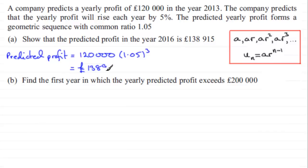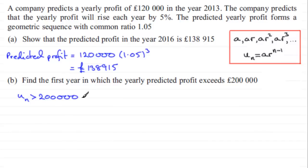In part B we need to find the first year in which the yearly predicted profit exceeds £200,000. In other words, U_n must be greater than 200,000. Using our formula, that means 120,000 × 1.05^(n−1) has to be greater than 200,000.